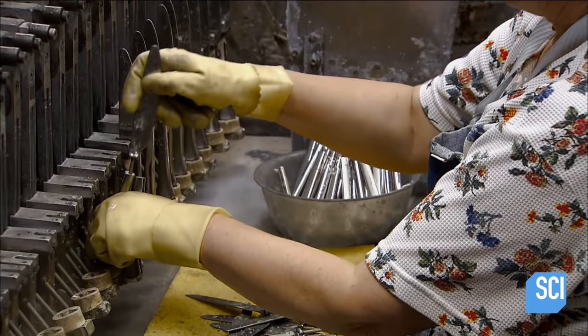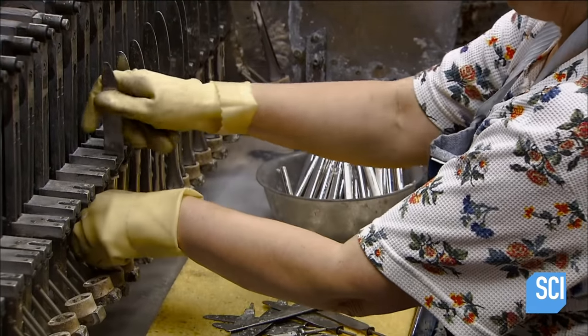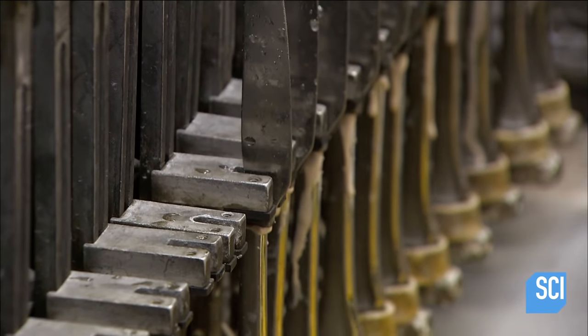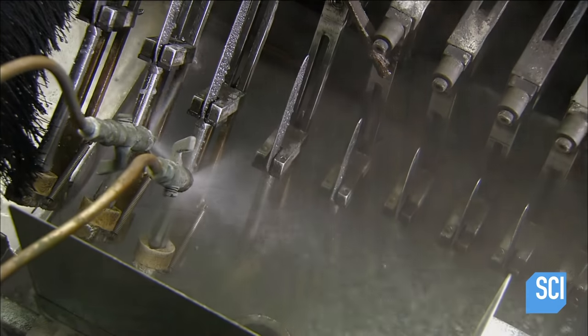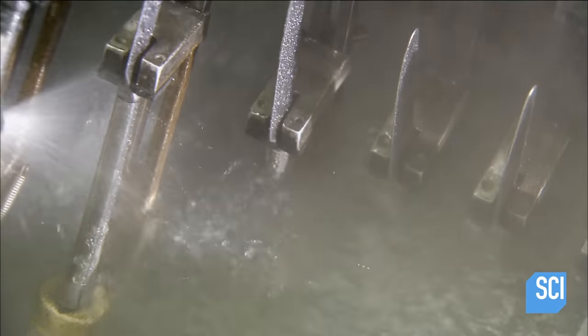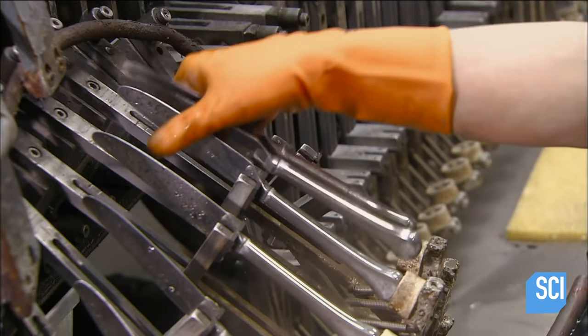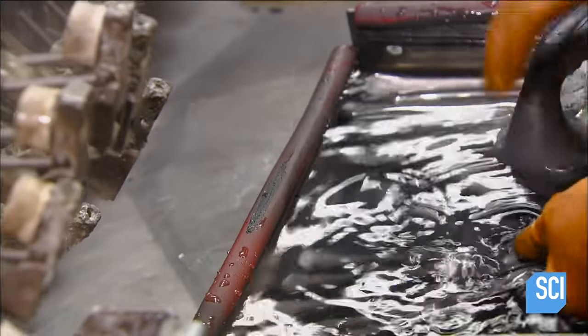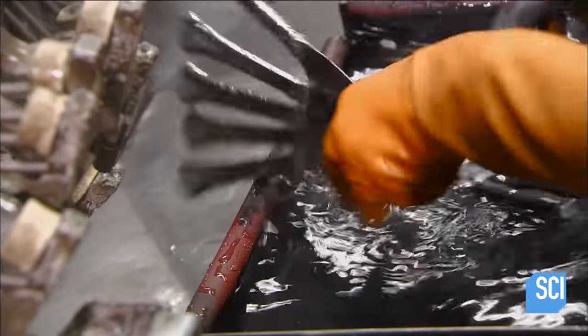Then workers insert a blade into each one. A 10-minute soak in hot water cures the cement. Workers scrub off any excess cement that oozed out.